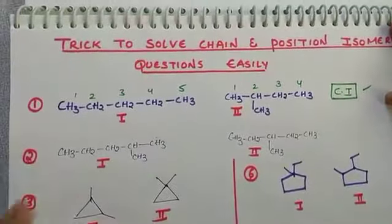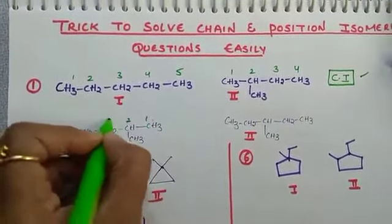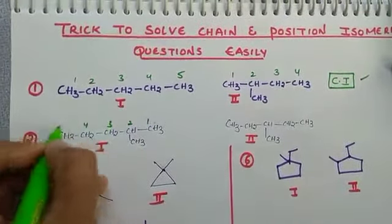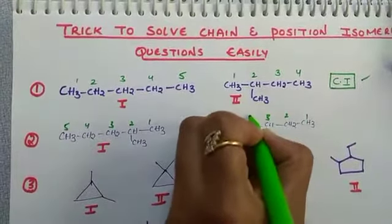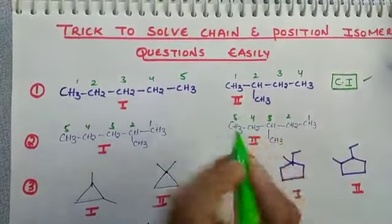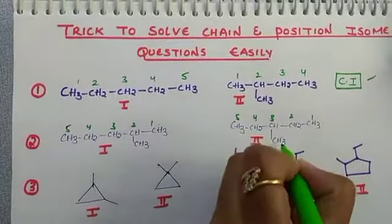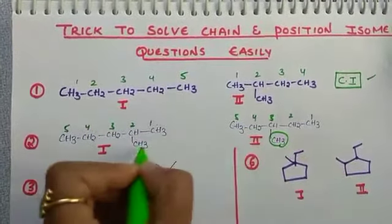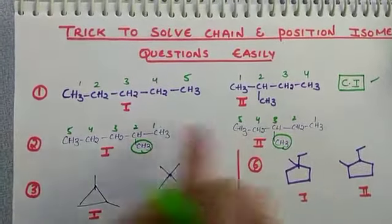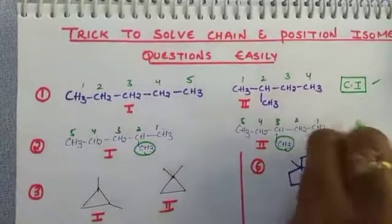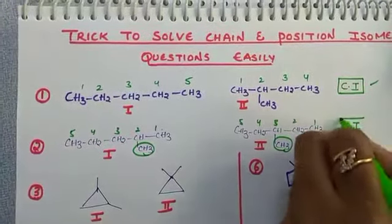Next question. Both structures have a parent chain of 1, 2, 3, 4, 5 carbons — the same parent chain. The side chain is also the same. But the position is different: the side chain is at the 2nd position in one and the 3rd position in the other. So these two are position isomers.